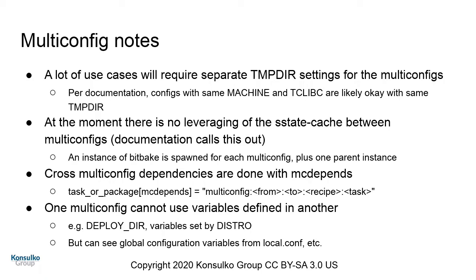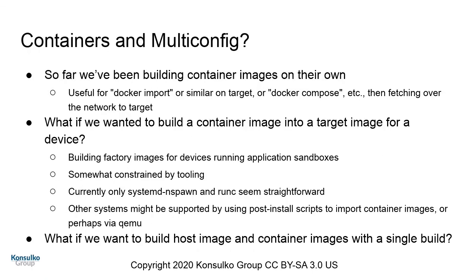One key thing to remember: multi-configs can't reference variables from each other because they're separate BitBake instances. This is important when you're trying to use bits from each configuration — you can't see the value of DEPLOY_DIR from the other build. However, anything in local.conf before the MULTICONFIG line is visible in both builds. This is one way to work around that, which I'll show if I get through all the slides.